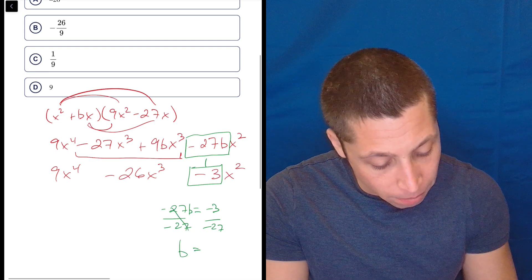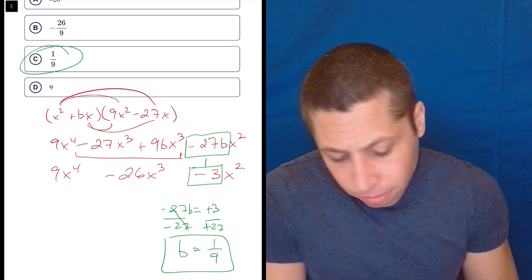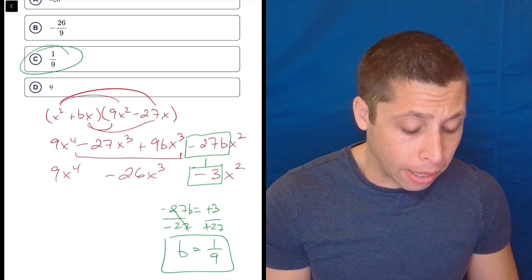Your negatives go away, and then 3 over 27 reduces to 1 over 9. So there it is. I don't think it's so hard to do. It works.